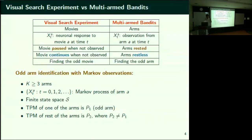Just go back to the movie example whenever this feels abstract. One movie was moving in a certain direction — you can associate a transition matrix between frames in that movie. The other movies have their own transition matrices. So one of them is P1, all others are P2. The goal is to identify which is P1 as quickly as possible.